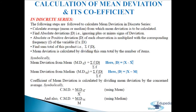Symbolically, coefficient of mean deviation C·MD = MD(mean) / mean, and also C·MD = MD(m) / M, where M means median. We will understand this discrete series with the help of an illustration in the coming slide.